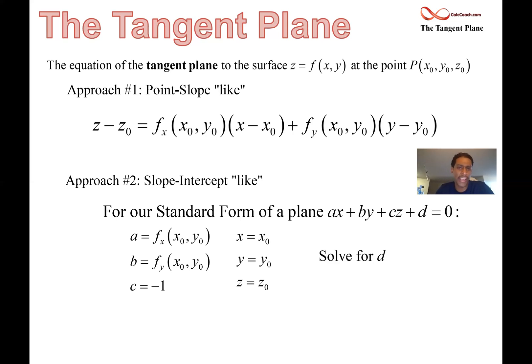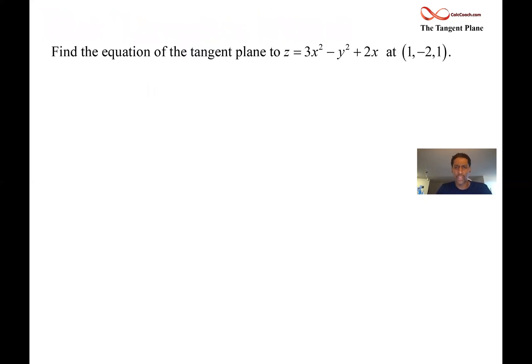So here are two examples. I'll do one each way. And you just decide which way you like best. So our equation is z equals 3x squared minus y squared plus 2x. Interested in the point when x is one and y is negative two, turns out then that z is one. And our job? Find the equation of the tangent plane.